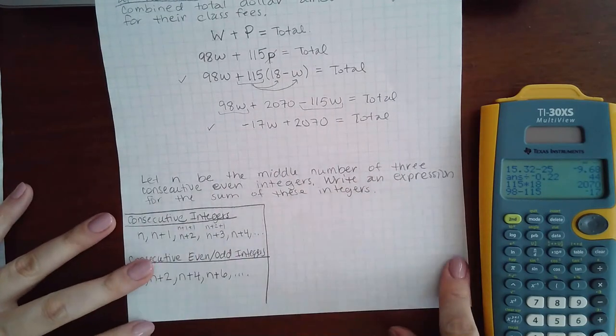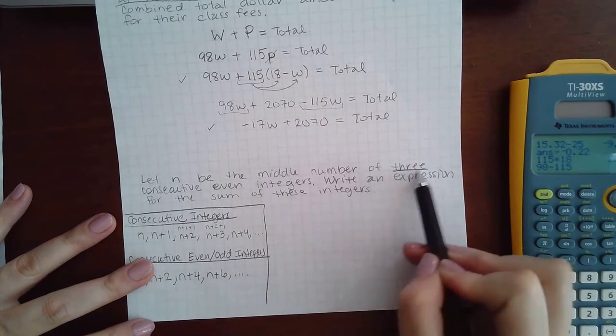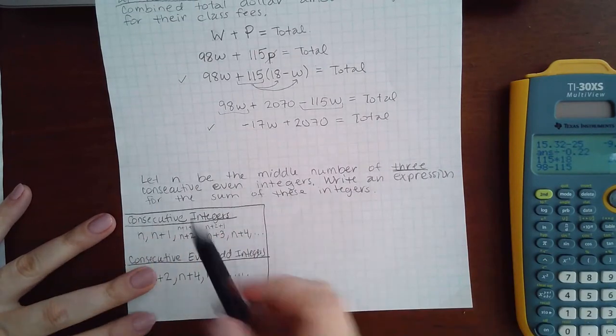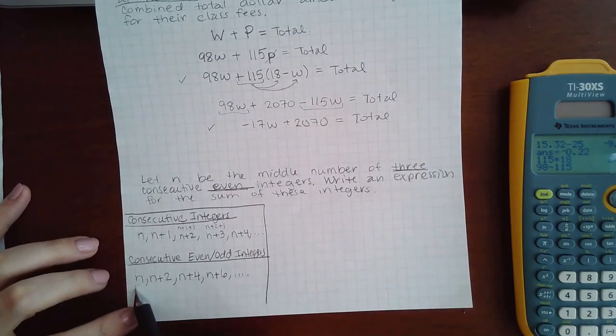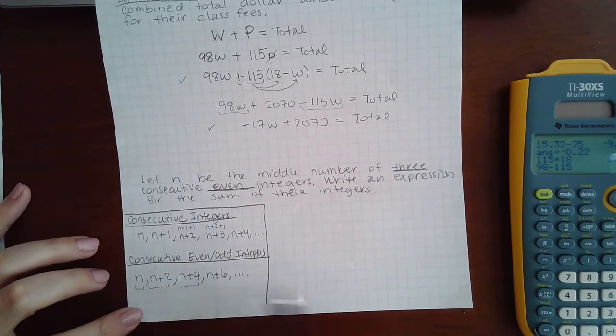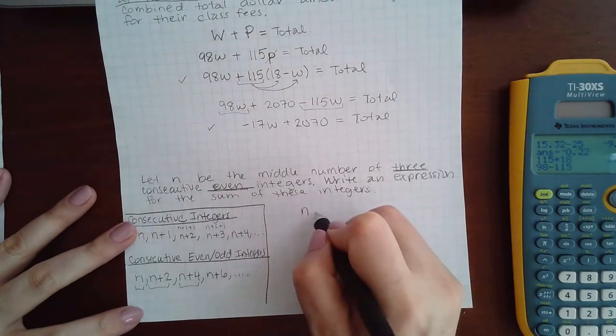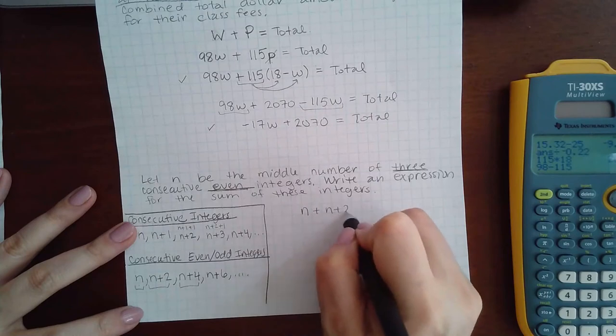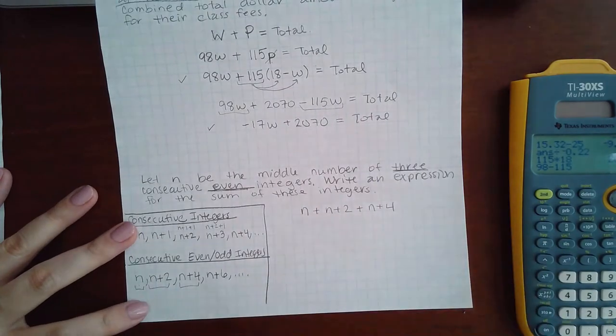In this particular problem, it says let n be the number of three consecutive even integers. So I know how many of these to take: I'm going to take the first three expressions. So you have n plus n+2 plus n+4. However, there's a problem here.